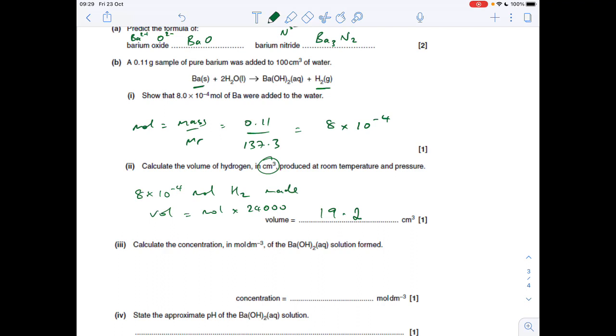The concentration in moles per decimeter cubed of the barium hydroxide solution formed: the moles of barium hydroxide is the same because of the 1:1 ratio. The concentration is moles divided by volume: 8 times 10 to the minus 4. The volume is 100 cm cubed of water, which is 0.1 of a decimeter cubed. So the concentration comes out at 8 times 10 to the minus 3.